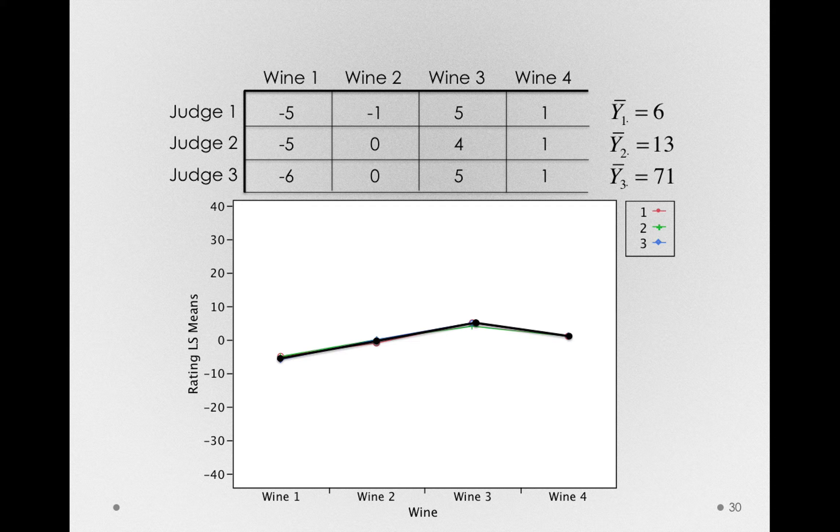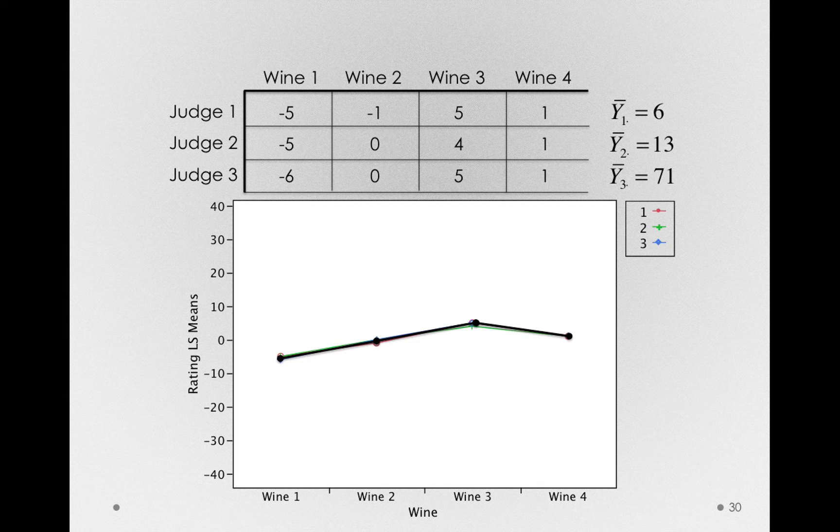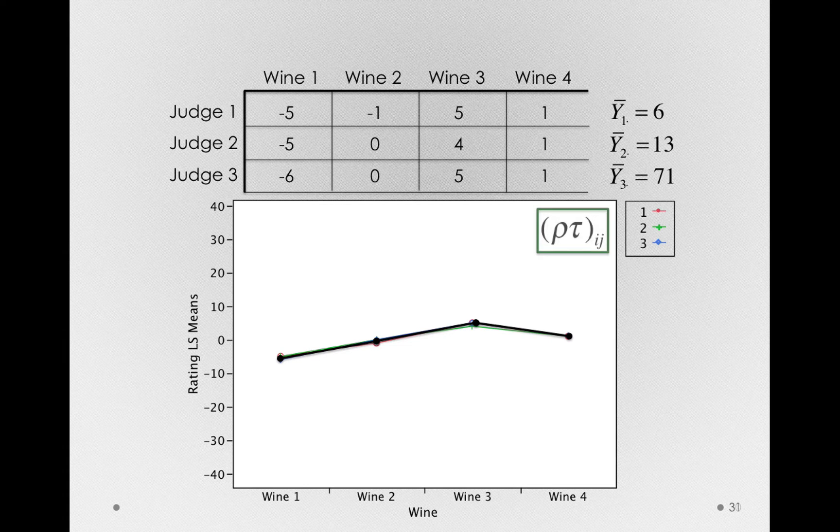Now I want you to notice something. That error we're paying attention to visually, the error in how judges are differing in how they make the ratings of wines, is the subject-by-treatment interaction term.